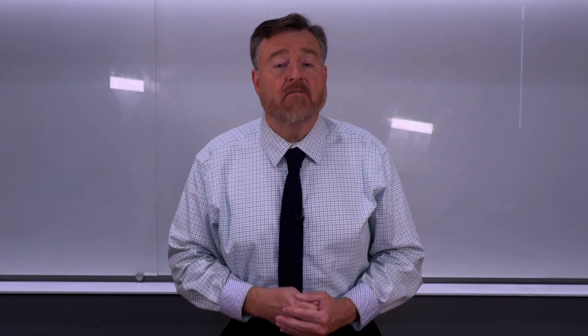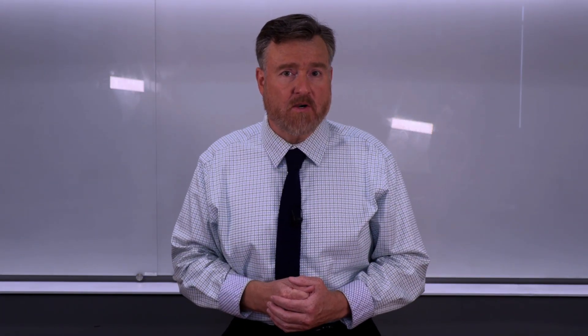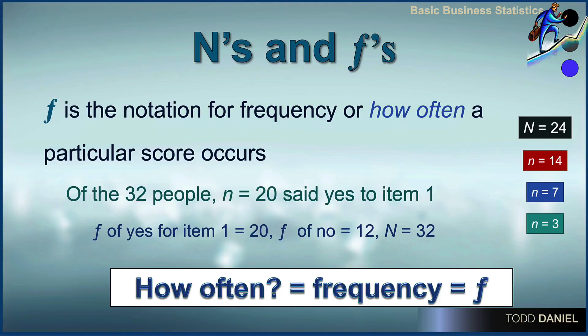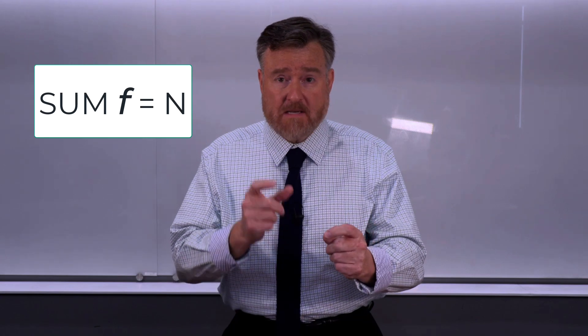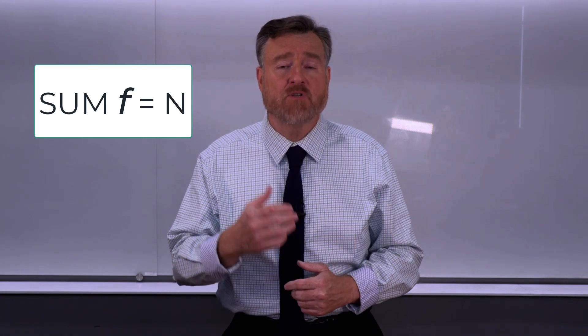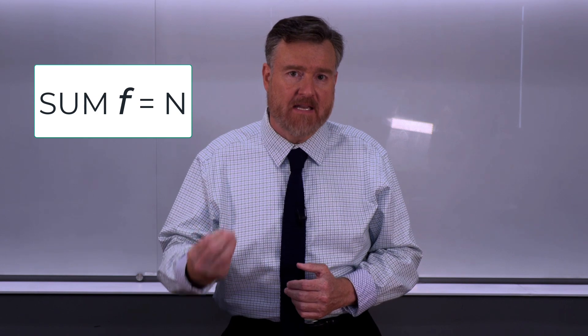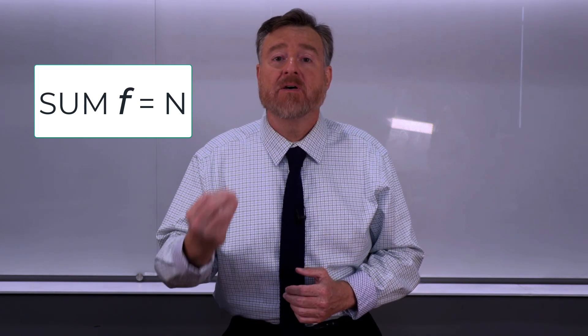The second question of how often a particular score occurs is answered with F. F is the notation for frequency, or how often a particular score occurs. Of our 32 people, 20 answered yes, so the frequency for yes in our data set was 20, leaving the frequency of no as 12. The total number of answers — 20 plus 12 — will always add up to our capital N, the sample size.